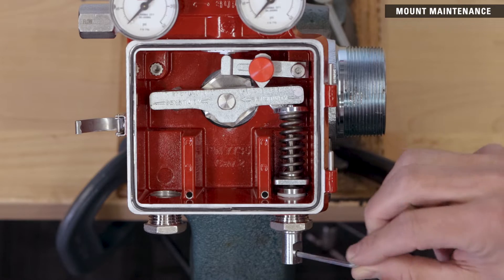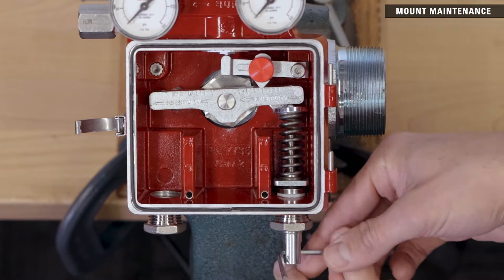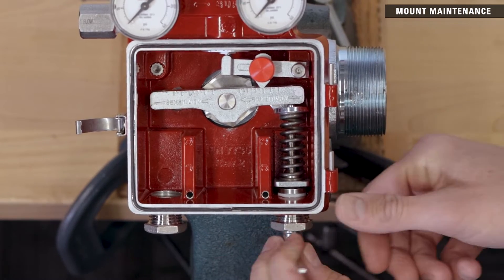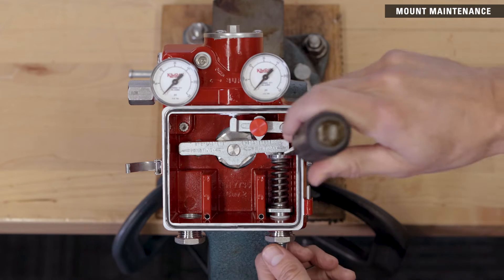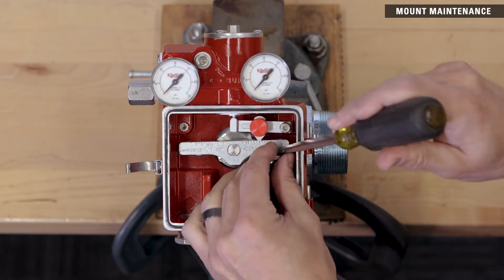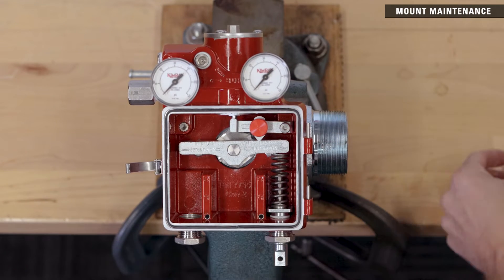Relieve some of the force on the spring by rotating the spring adjusting knob clockwise until the lower spring plate bottoms out. Remove the spring and upper spring plate.